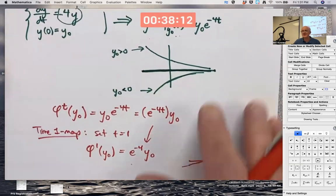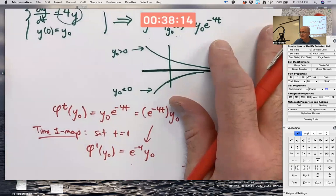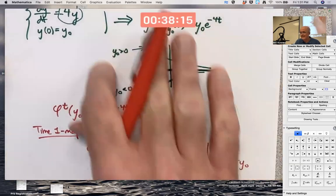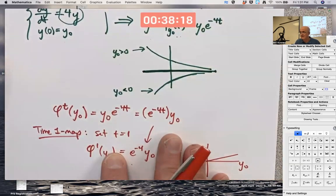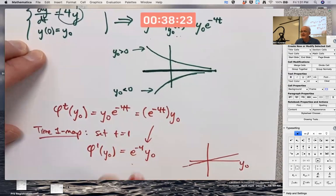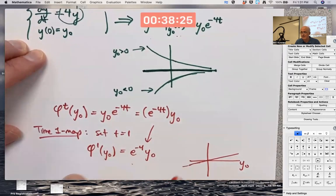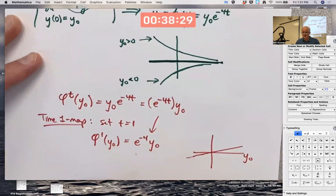What doesn't work is the matrix exponential is not relevant anymore. But the flow idea still is relevant. And the relationship between the differential equation and the flow with regard to the time one map that I'm about to say still is relevant. And what is that relationship?